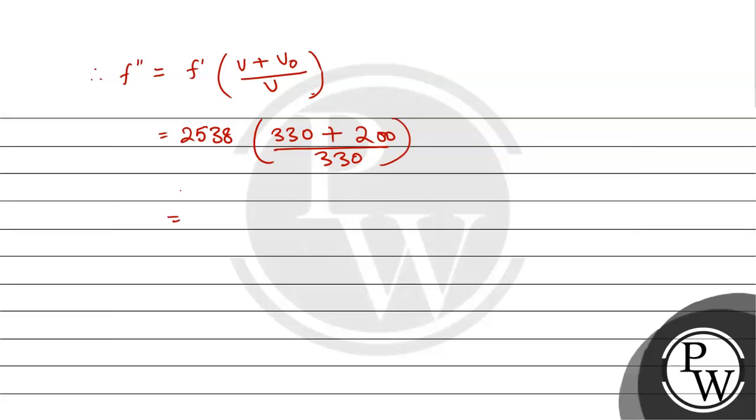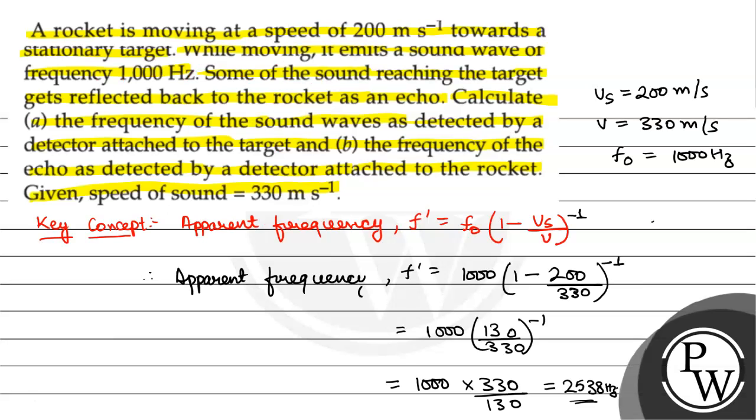This is 4076 Hz. This is the frequency of echo the rocket listener detects. Hope you all understood it well. Best of luck.